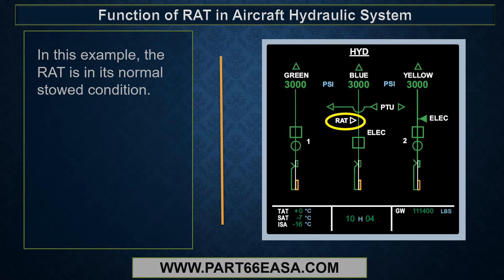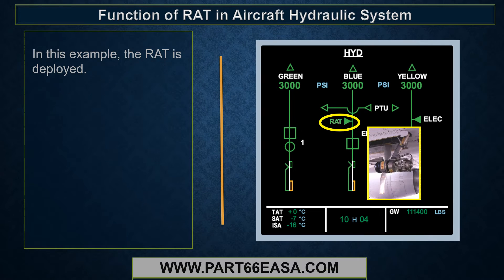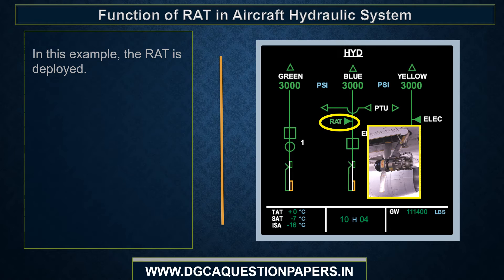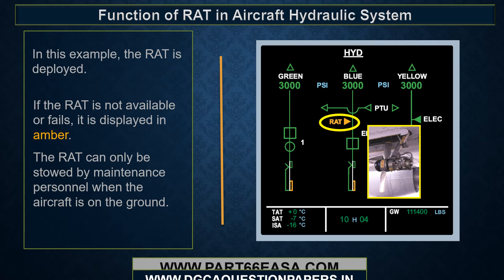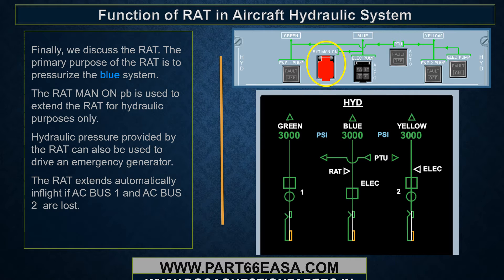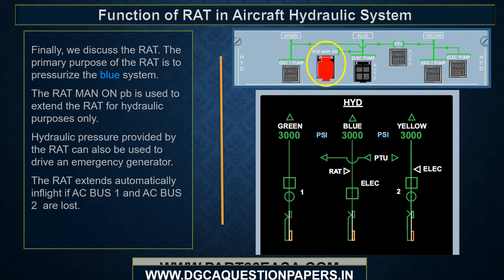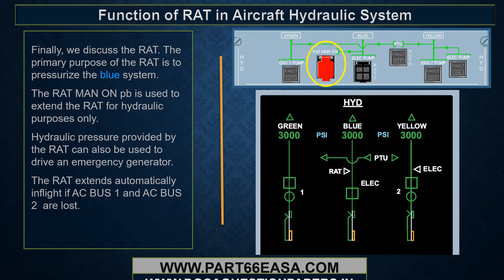In the normal stowed condition, the RAT is not deployed. When deployed, the RAT is shown in its extended state. If the RAT is not available or fails, it is displayed in amber. The RAT can only be stowed by maintenance personnel when the aircraft is on the ground. The primary purpose of the RAT is to pressurize the blue system. The RAT MAN ON push button is used to extend the RAT for hydraulic purposes only; hydraulic pressure provided by the RAT can only be used to drive an emergency generator.